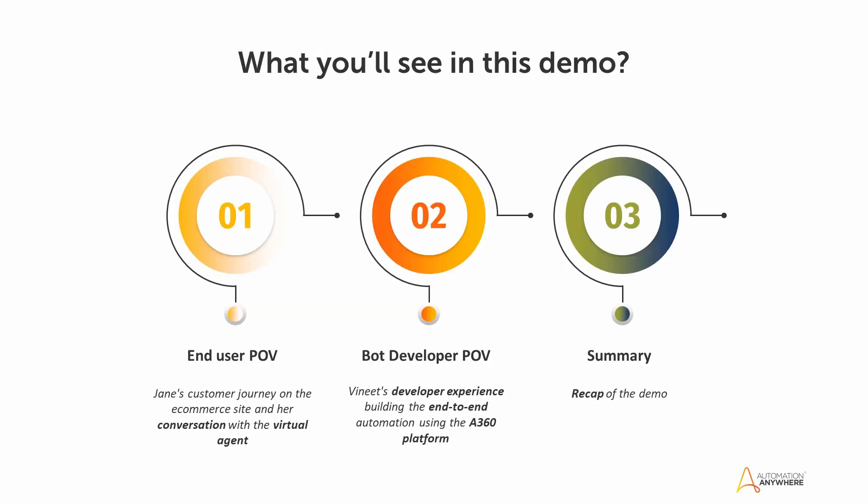To make it easier to follow, here is a map of what's ahead. First, we will walk through the customer's journey on the eCommerce site and her conversation with the virtual agent. You will see how Automation 360 is integrated with the CoreAI chatbot and how the chatbot triggers bots in Automation 360 to initiate a backend process that creates a service ticket for Jane and also informs support engineers of the incident ticket. Next, we will show you the automation developer's journey — how easy it is to create the entire automation end-to-end by leveraging pre-built packages from the bot store and using Automation 360's powerful API capabilities to integrate with conversational AI and external applications like ServiceNow and MS Teams. We will end with a summary of Automation 360 capabilities demonstrated in this demo.